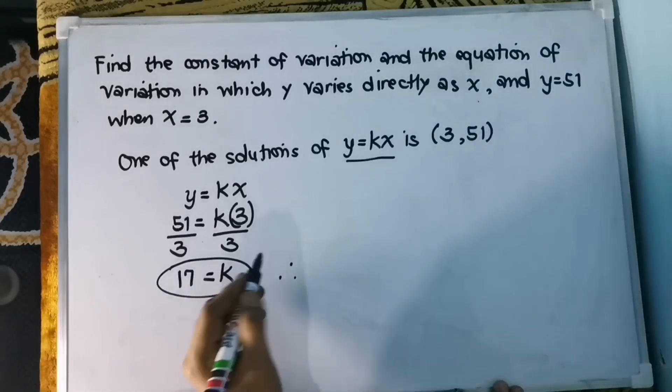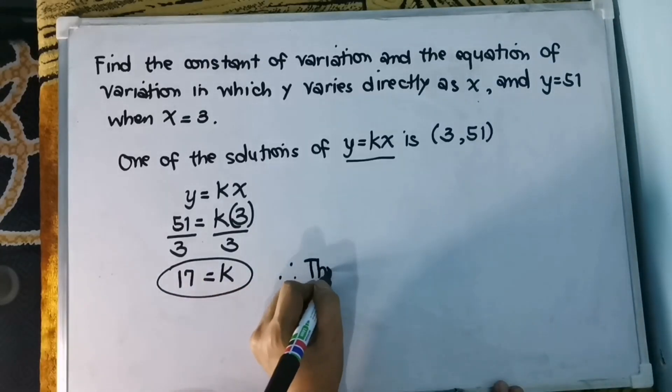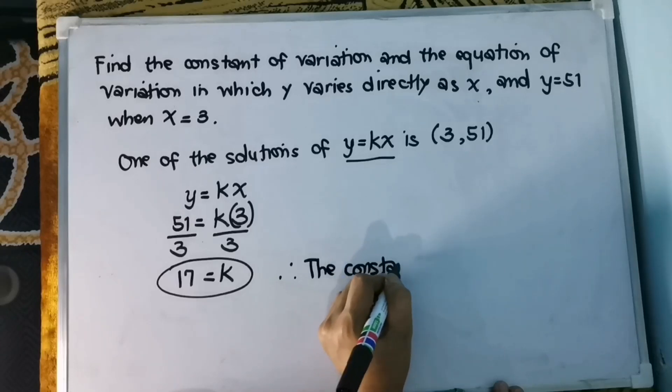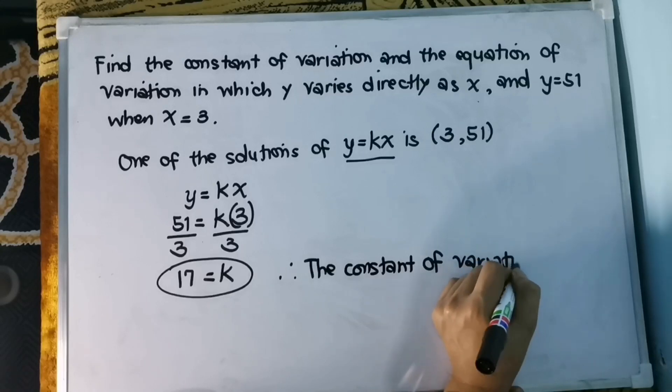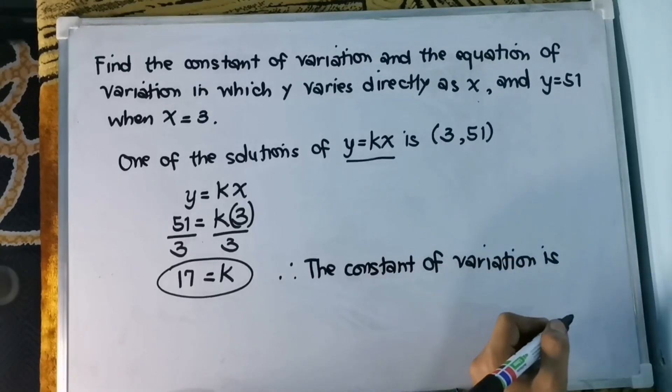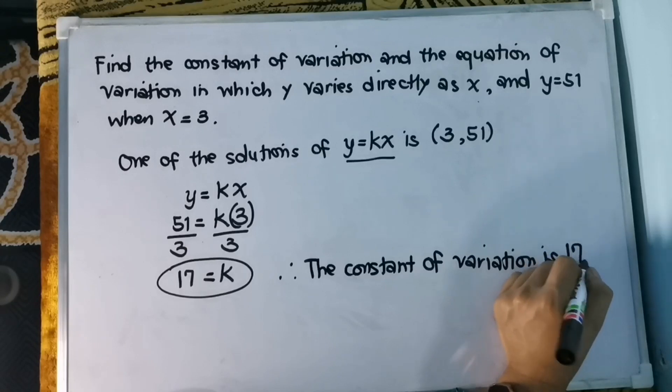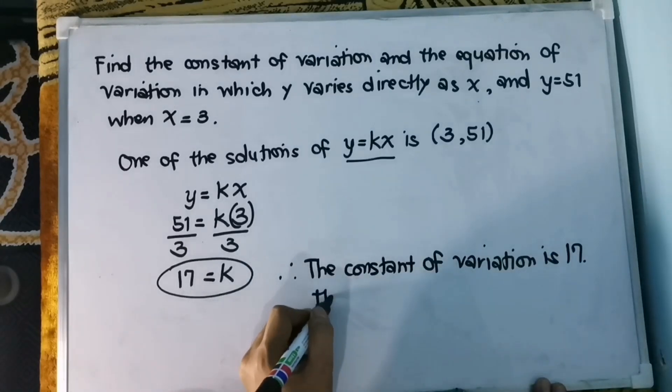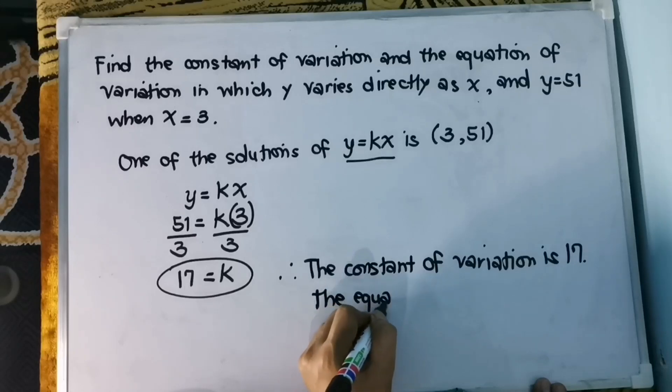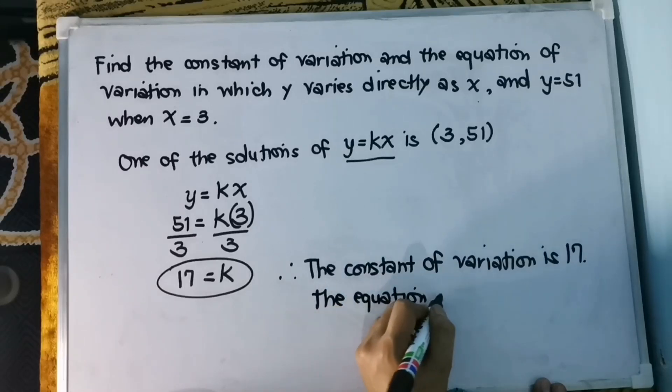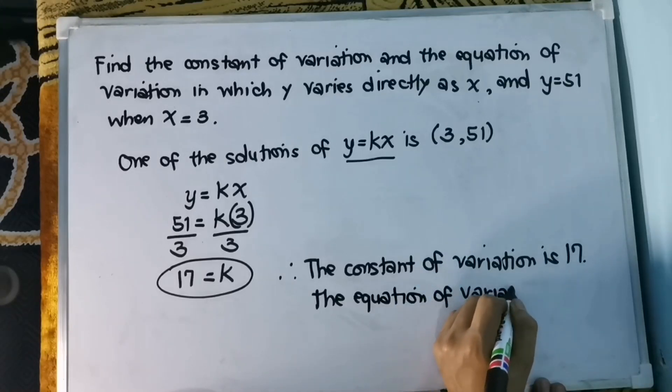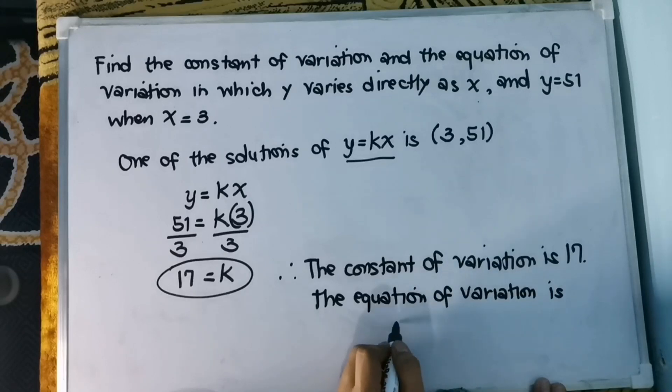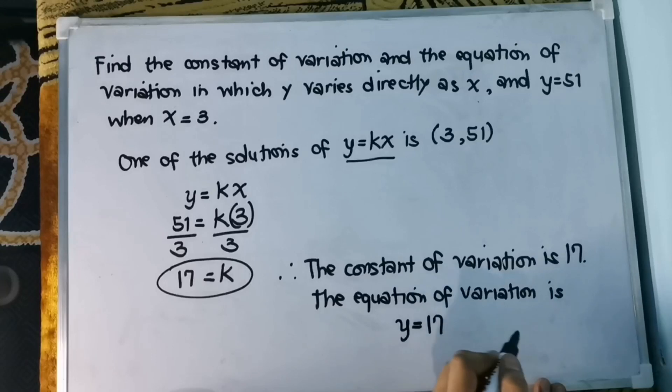We can say that the constant of variation is 17. And the equation of variation is y equals, patan lang natin yung k na 17, and then x.